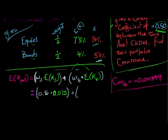Plus the weight of bonds was 0.5 multiplied by the return on bonds, the expected return is 4%. So I'm going to enter that as a number as well, 0.04.